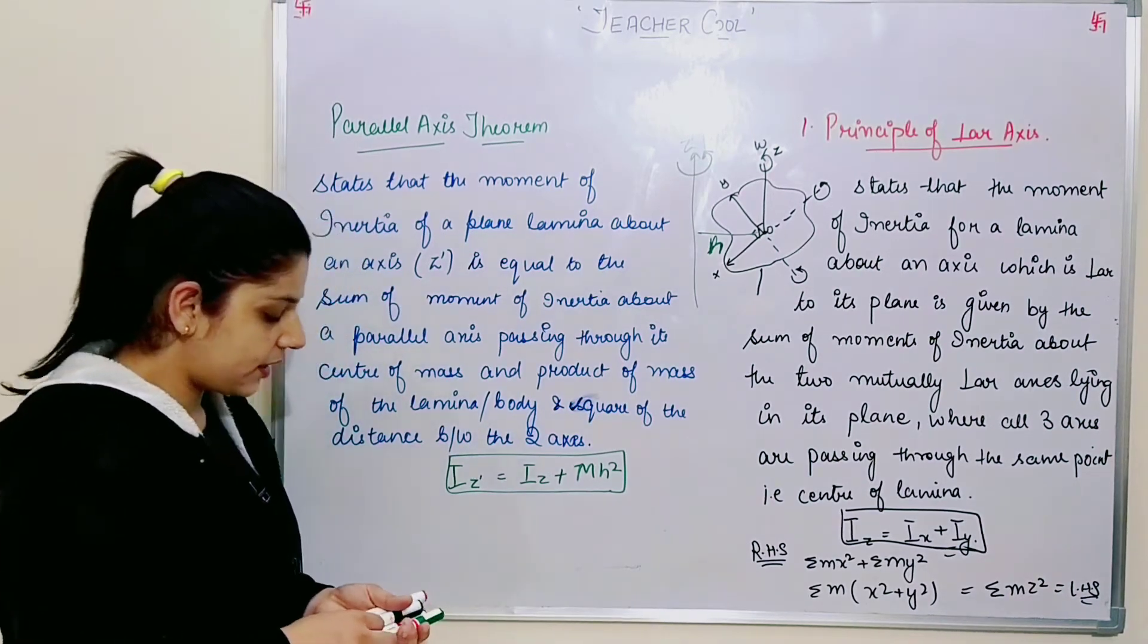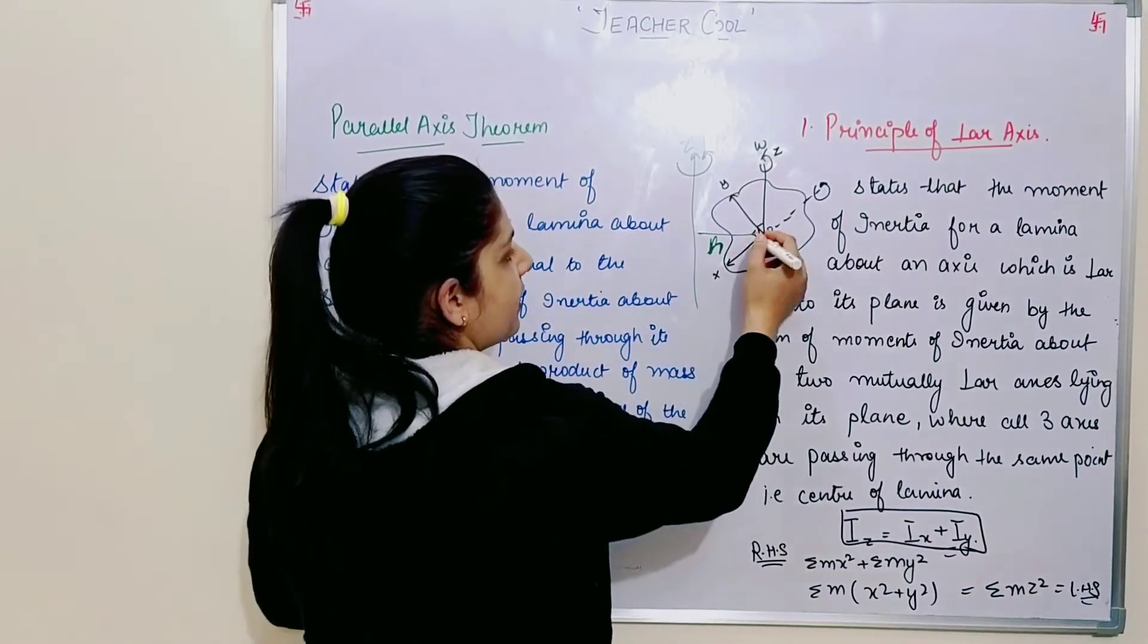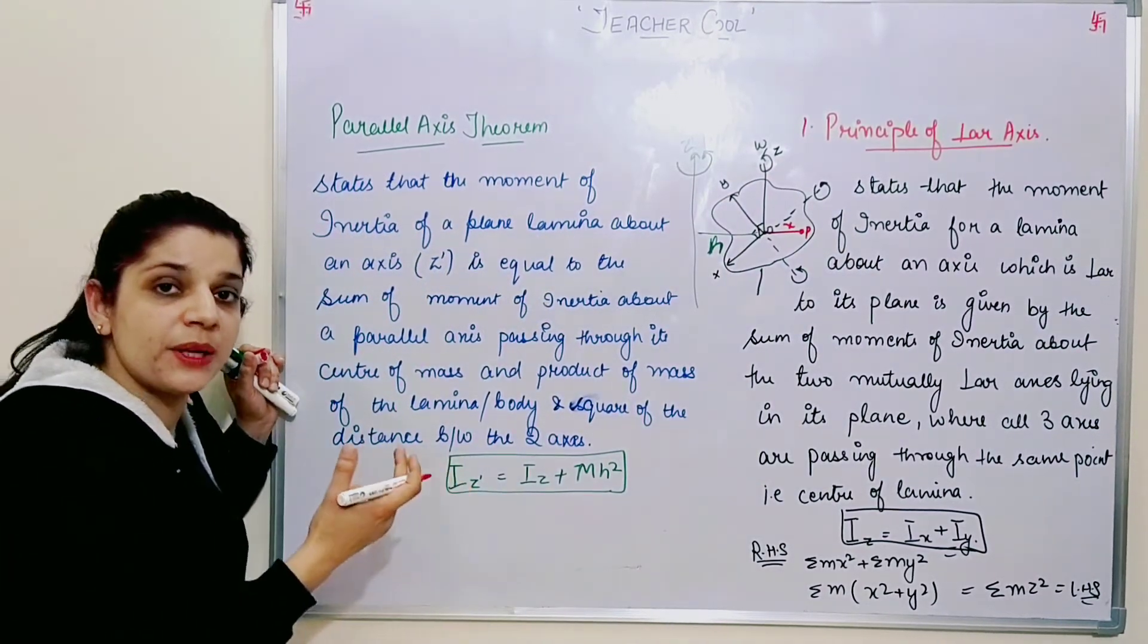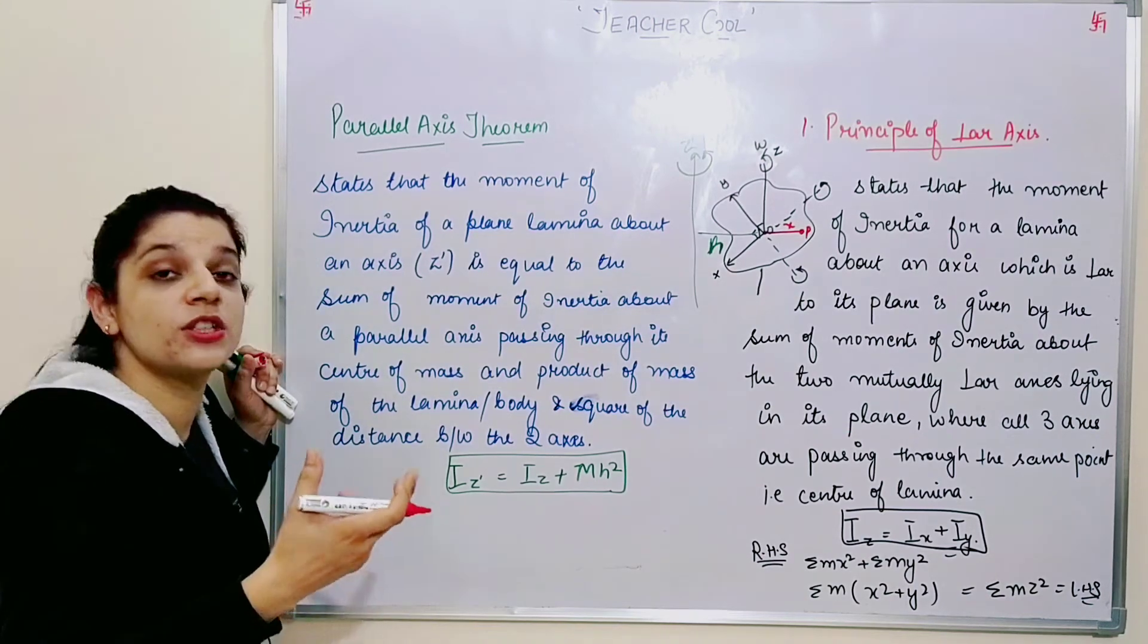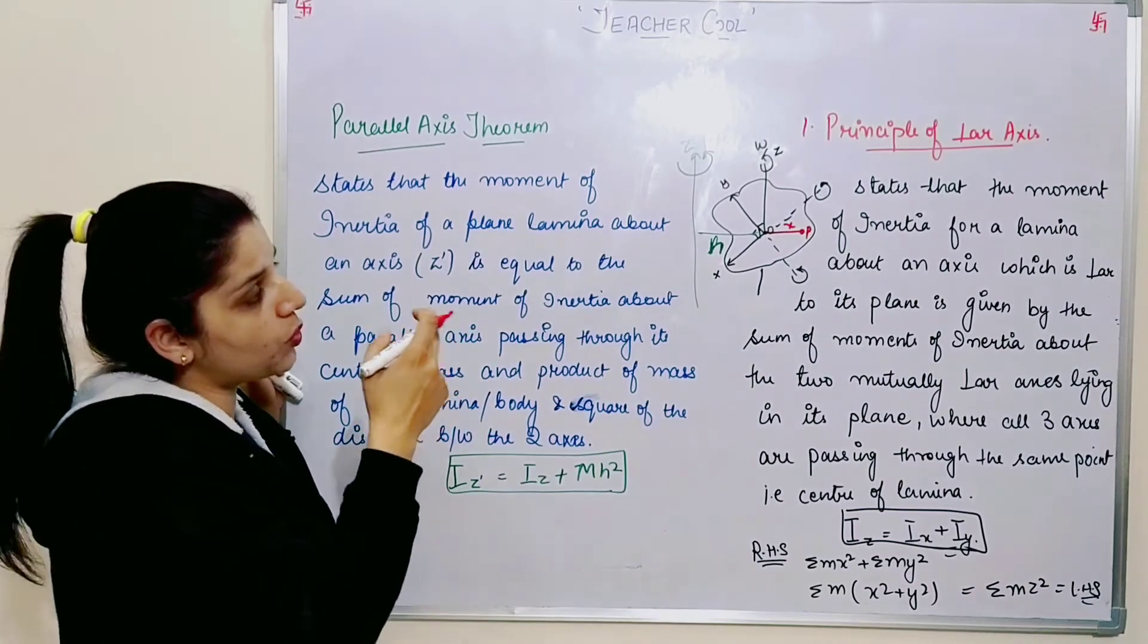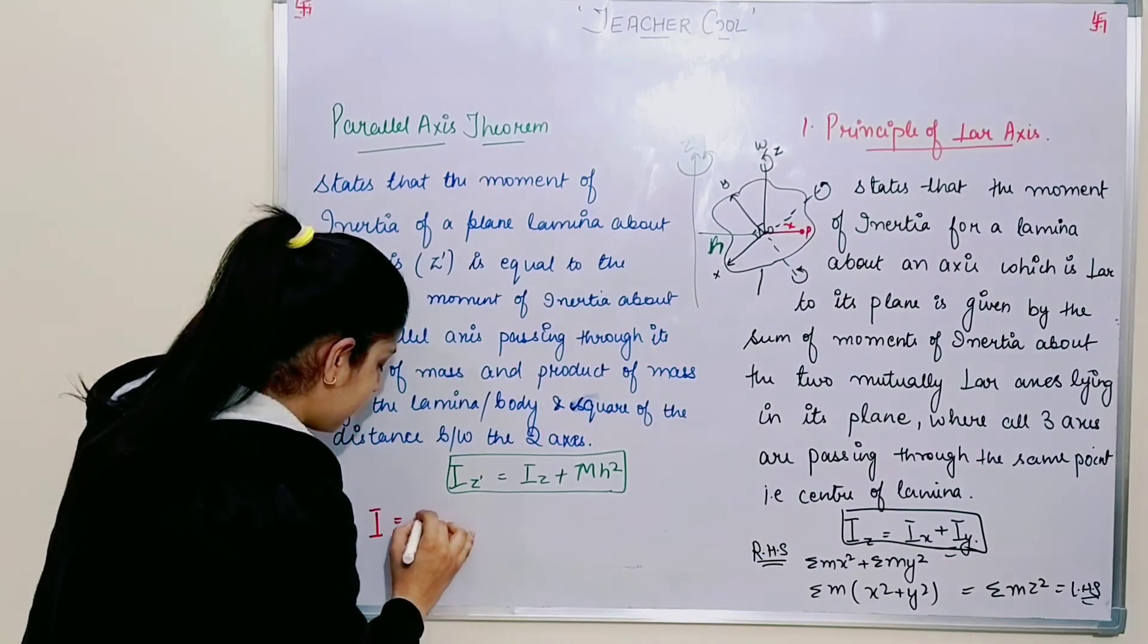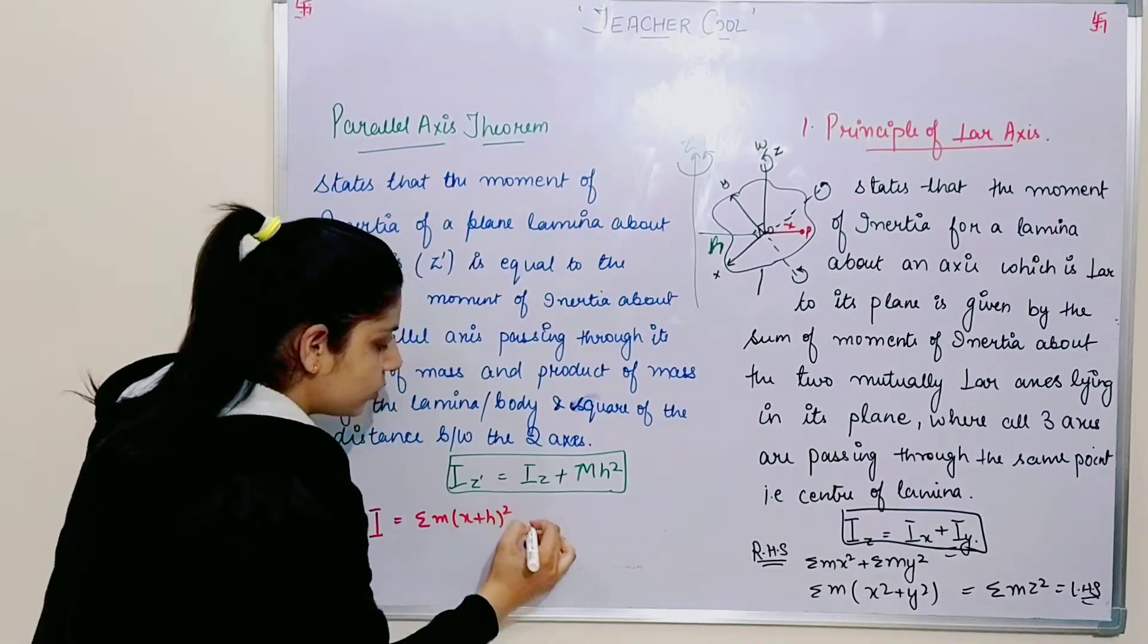We'll say, this distance is H. I have taken point P, its distance is x. So P point will be the point which will act as center of mass. So my moment of inertia will be given as summation m times x plus h whole square.